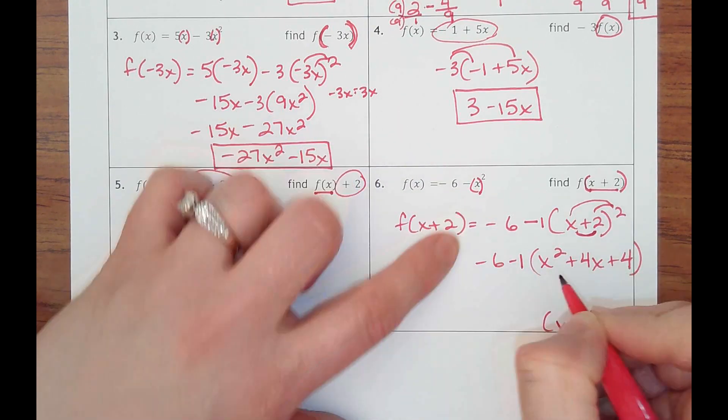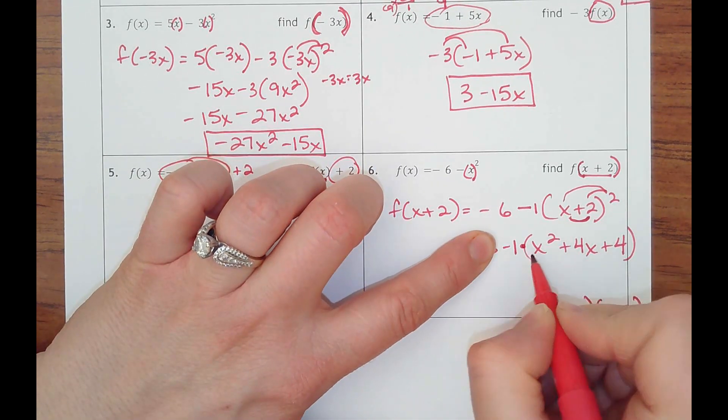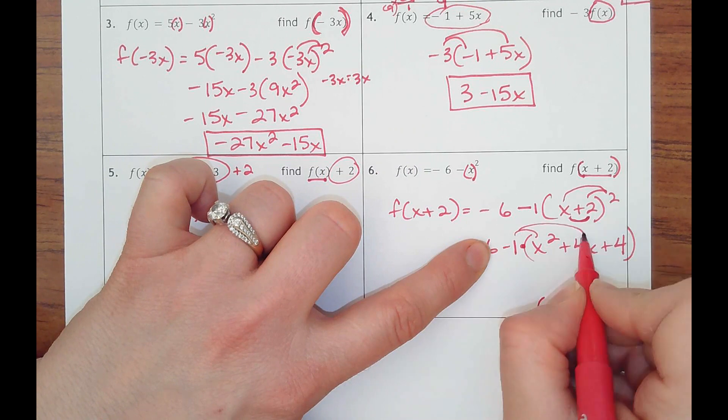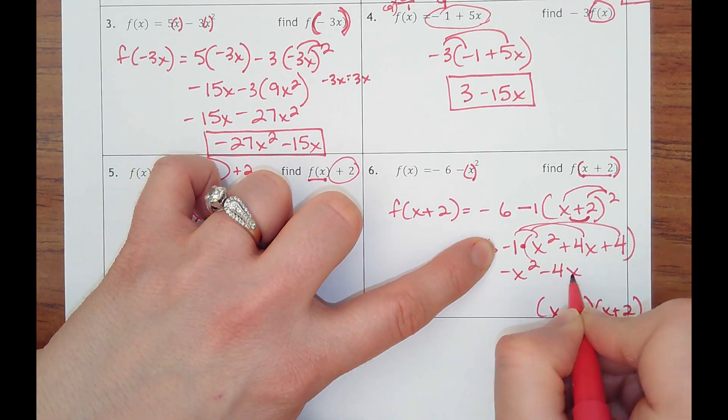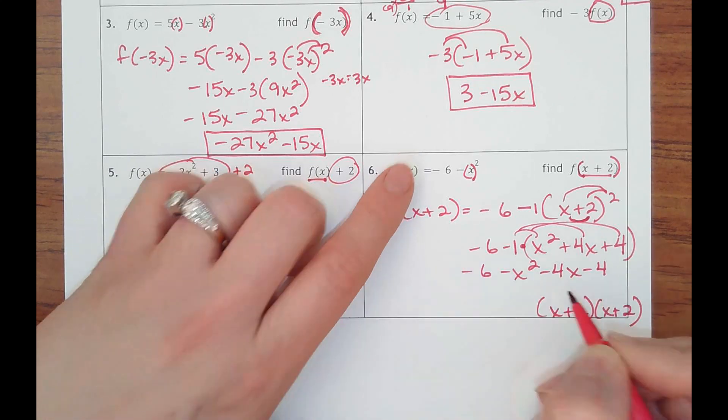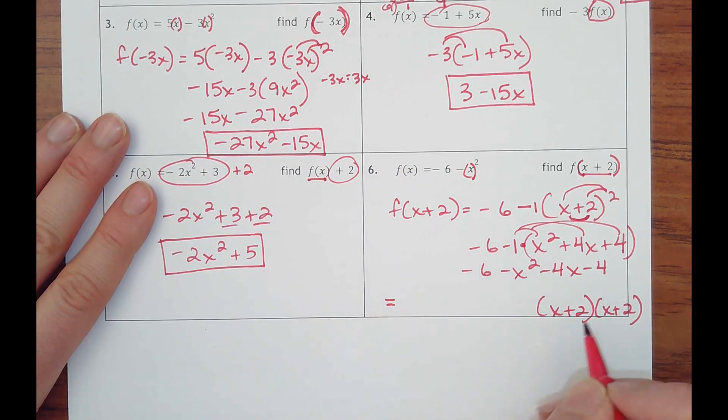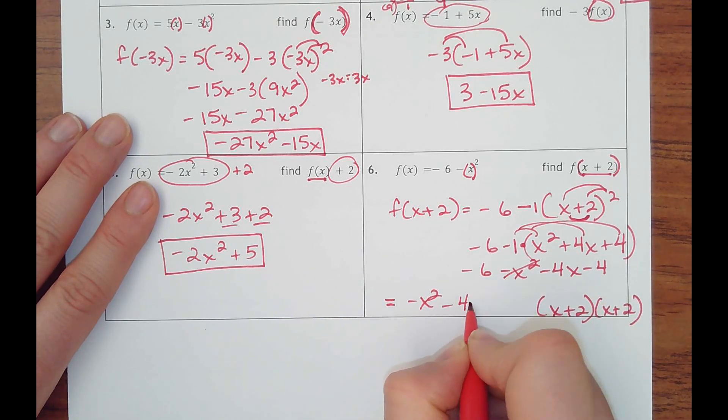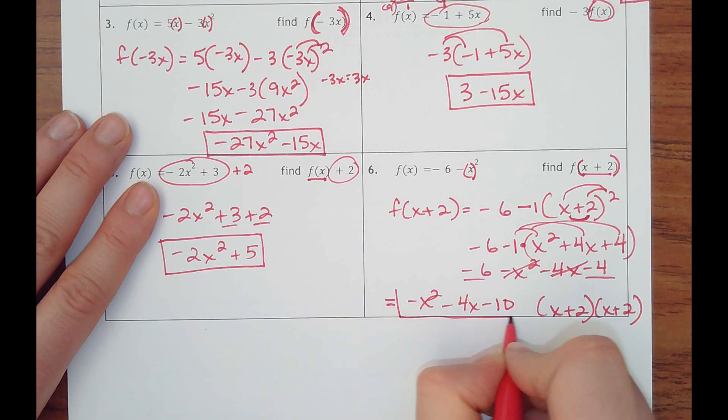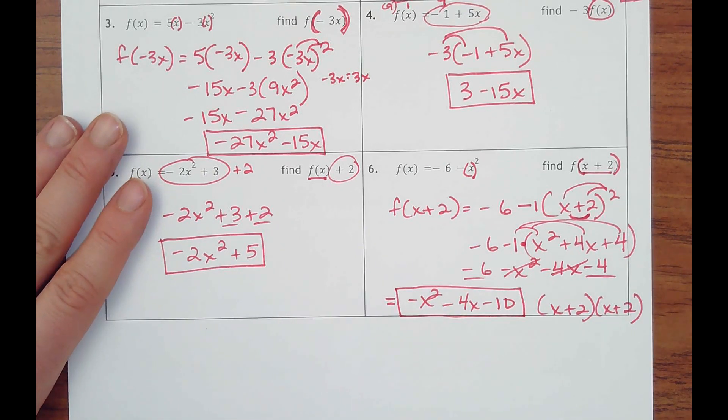I do not want to do negative six minus one, because this is multiplication coming before the subtraction. So if I distribute a negative one, that changes the sign of everything. And then I just combine my like terms. So I'm going to put the negative x squared first minus four x minus 10 would be my final answer. And that's how you evaluate functions.